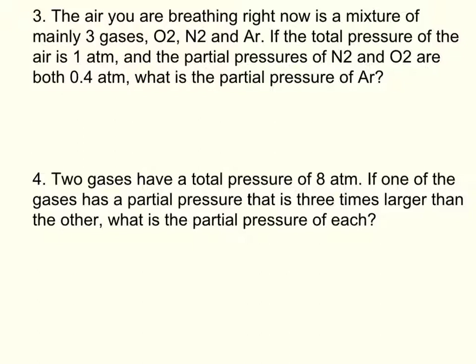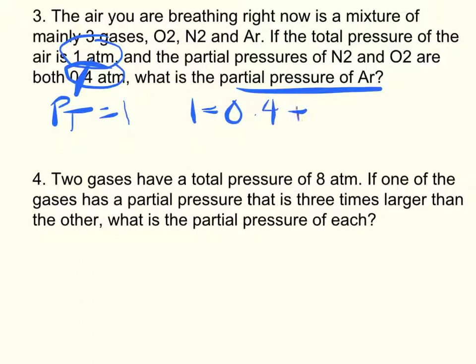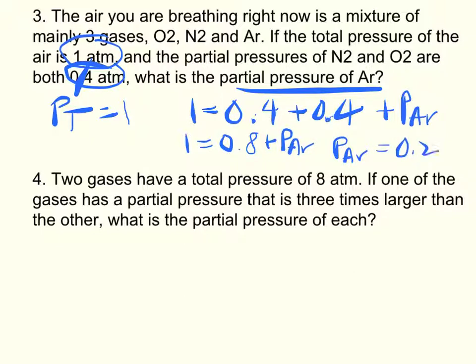All right. For number three, you have a mixture of three gases. The total pressure is 1 atm, PT. And you have the partial pressures of N2 and O2 are 0.4. What is the partial pressure of Ar? So what we have here is PT, which equals 1. 1 equals 0.4 plus 0.4 plus PAr. So PAr minus 0.8 from both sides equals 0.2 atm.